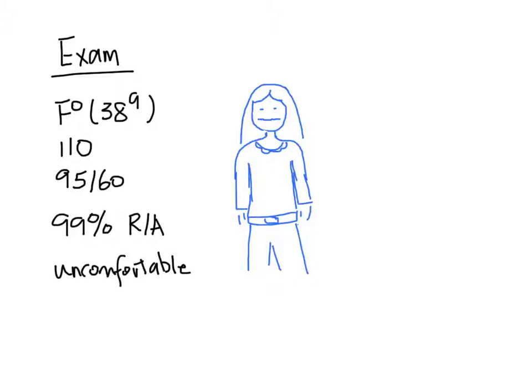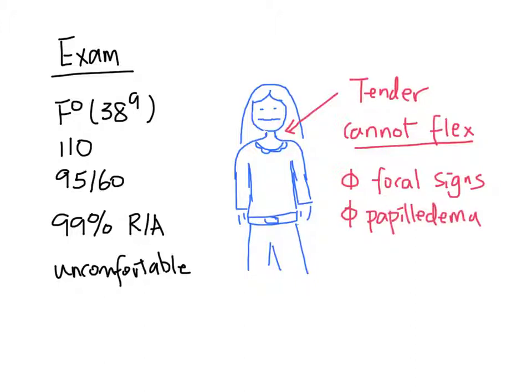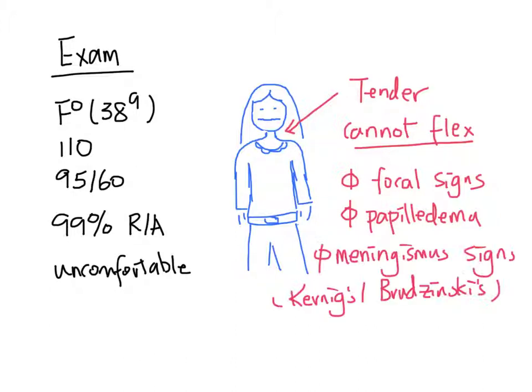When you examine her, she points to her posterior neck as being tender, and it was difficult for her to flex her neck. She has no focal neurological signs and no papilledema. Her Kernig and Brudzinski signs were both negative. She has no rash or joint pain.